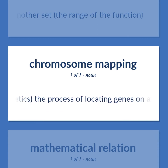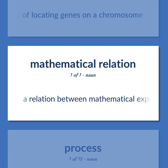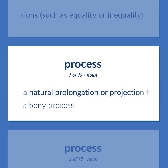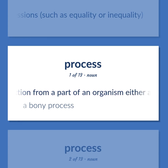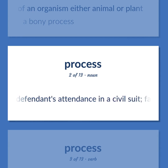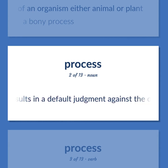Genetics: A process of locating genes on a chromosome. A relation between mathematical expressions, such as equality or inequality. A natural prolongation or projection from a part of an organism, either animal or plant. A bony process. A writ issued by authority of law; usually compels the defendant's attendance in a civil suit; failure to appear results in a default judgment against the defendant.